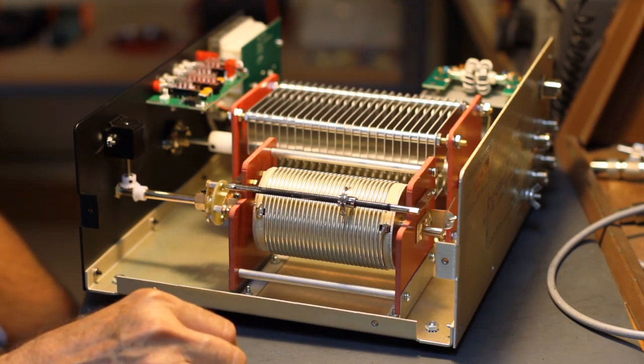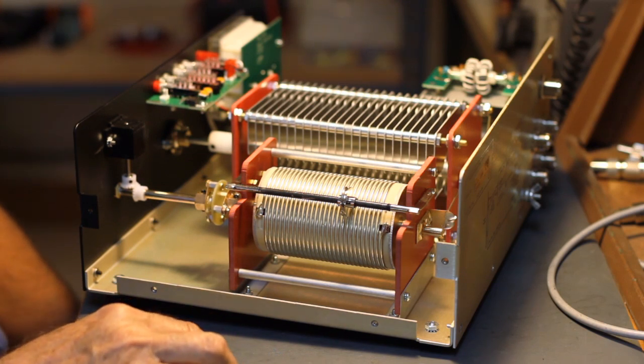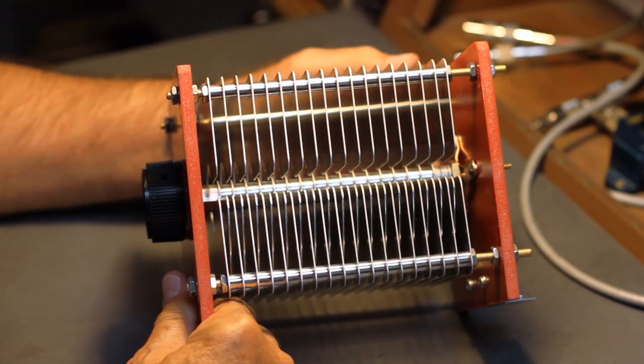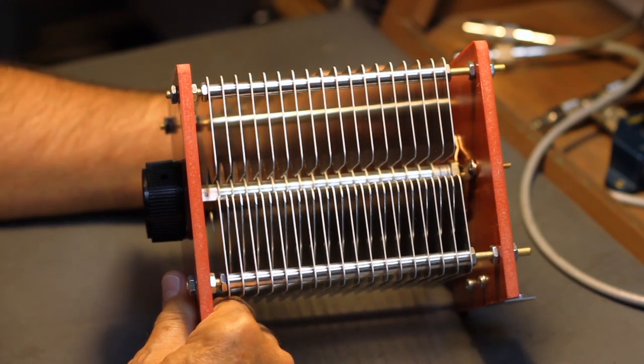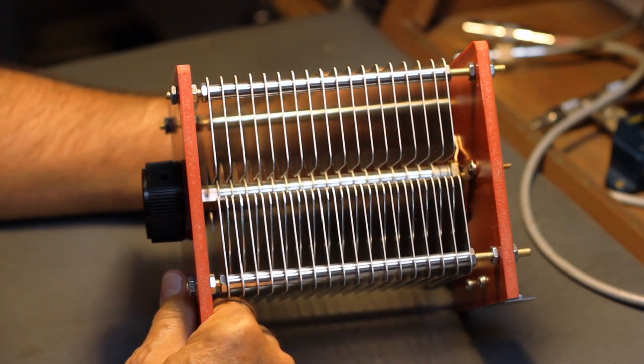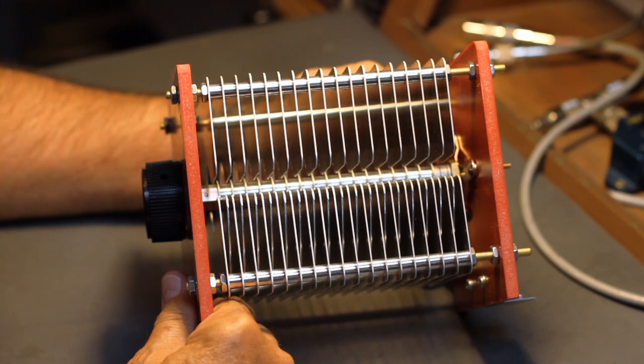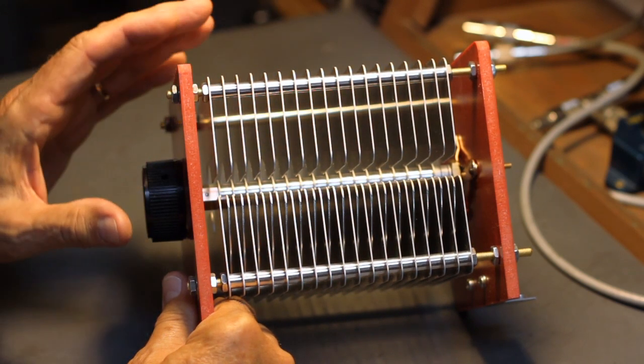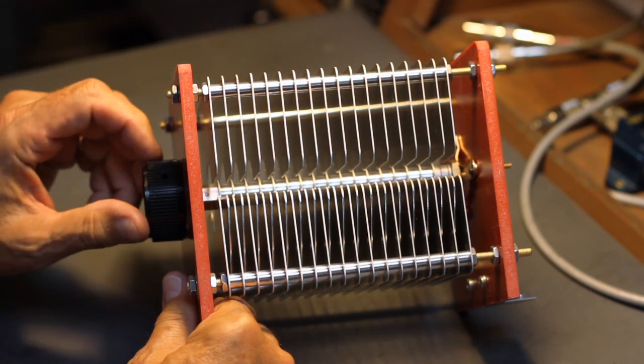I'd like to show you a little bit more detail about the differential capacitor and how it works in the tuner. This is the differential capacitor I was referring to when describing the internal workings of the AT2KD. And I just wanted to give you a rough idea of what this construction is. This particular capacitor belongs to the HF Auto.